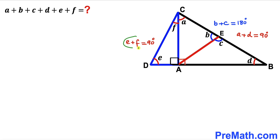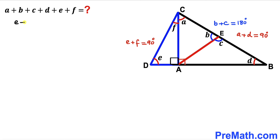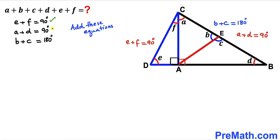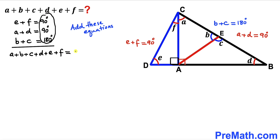We now have three equations. The first is E plus F equals 90 degrees. The second is A plus D equals 90 degrees. And the third is B plus C equals 180 degrees. Now we add them all up. Adding the left-hand sides gives us A plus B plus C plus D plus E plus F.